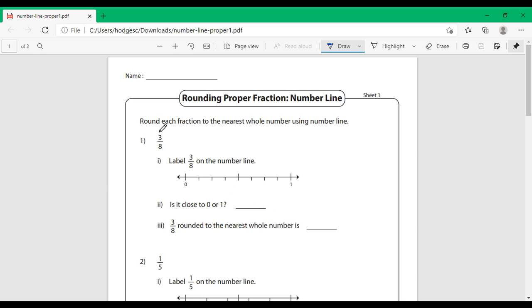Looking at our first example, we have 3 eighths, and we are asked to label 3 eighths on the number line. If you notice, this number line is designated by 0, 1 half, and 1.